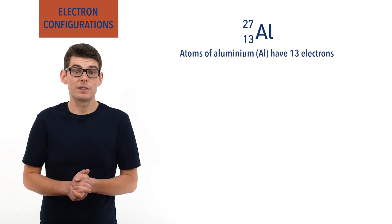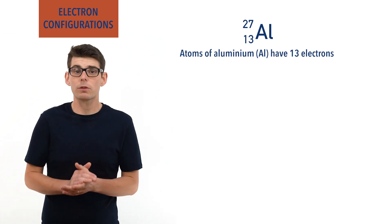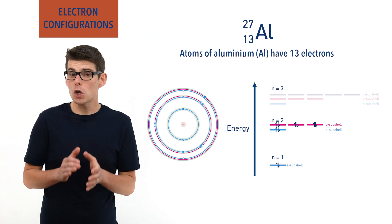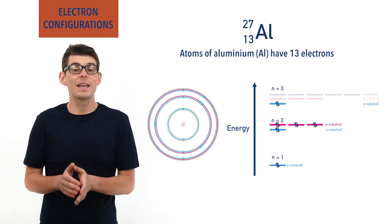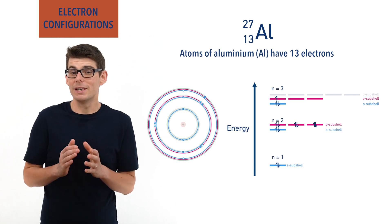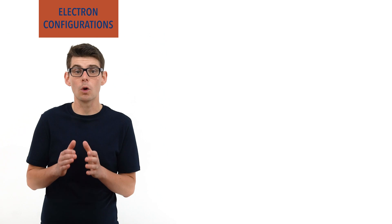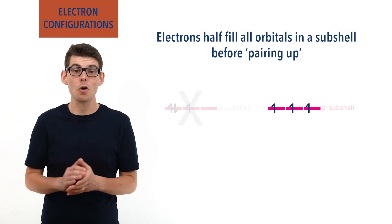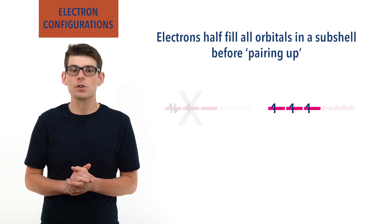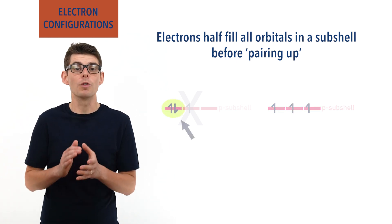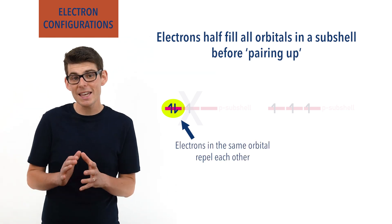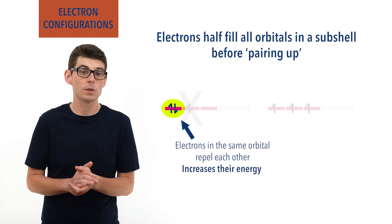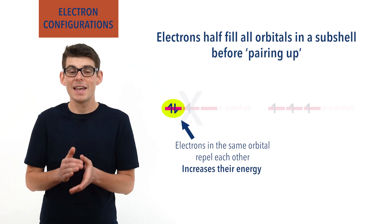For aluminium with 13 electrons, the same process is followed — two electrons in the first energy level, eight electrons in the second energy level, and three in the third, with two of those electrons in the S orbital and one in a P orbital. When filling orbitals in a subshell, electrons will half fill all the orbitals in the subshell before they pair up. This is because when two negatively charged electrons are put into the same orbital, repulsion occurs between them, meaning it is harder to put a second electron into a half-filled orbital than into another empty orbital in the same subshell.